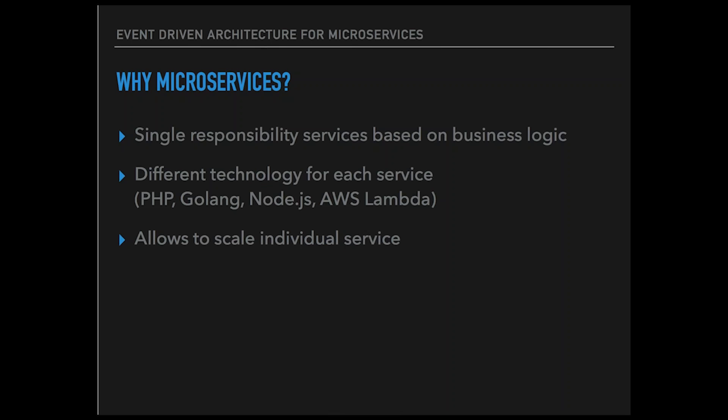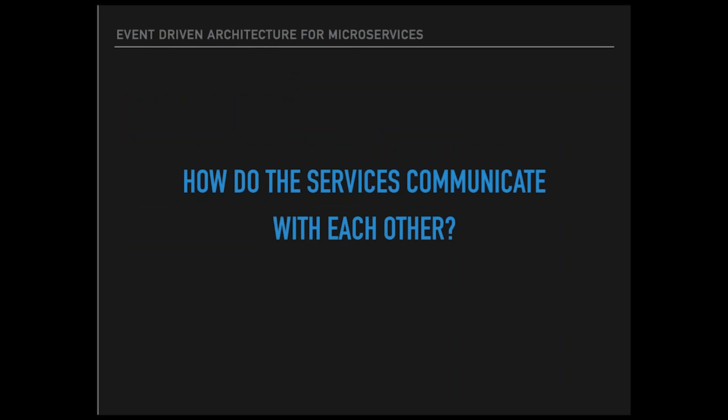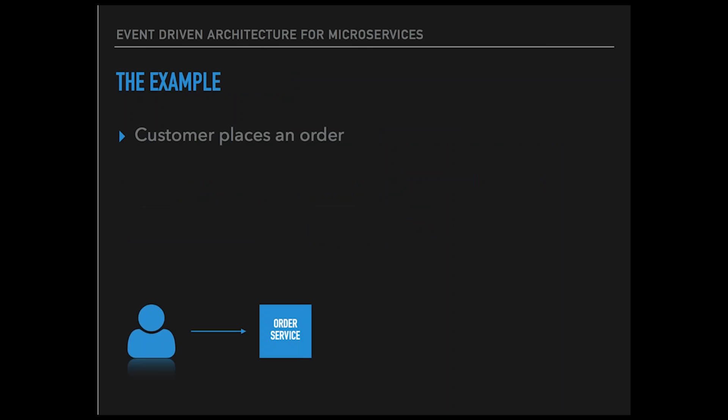So, why microservices? When we started to build our platform at Casco, we had the luxury of choosing how we want to do it, and we chose microservices for many reasons. By using microservice architecture, you can build small services that are all responsible for a single thing. You can use different technologies for each service, and most importantly, it allows you to scale only certain parts of your application stack, which was quite important in our case, since we have services that get huge amounts of traffic and some other services that are more relaxed to traffic. Soon enough, we faced the question: how do these services communicate with each other?